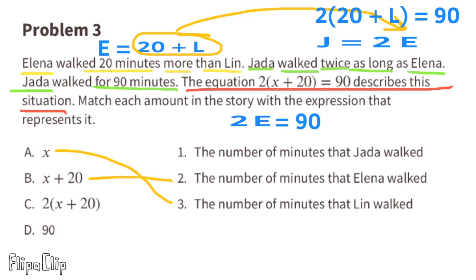Expression x plus 20 (or 20 plus x) represents l plus 20, matching situation 2: the number of minutes Elena walked. Expression 2 times x plus 20 represents the number of minutes Jada walked. Since Jada walked 90 minutes, situation 1 matches both expression c and expression d.